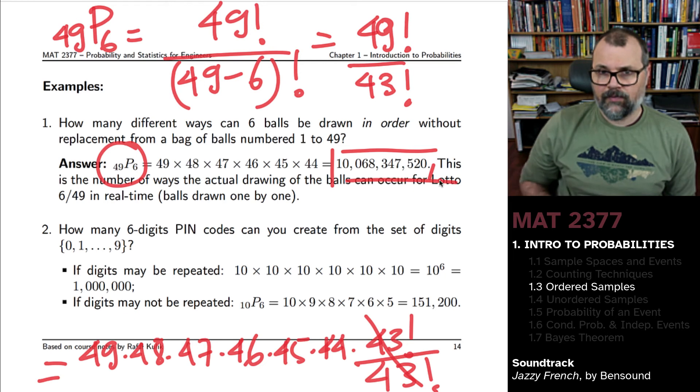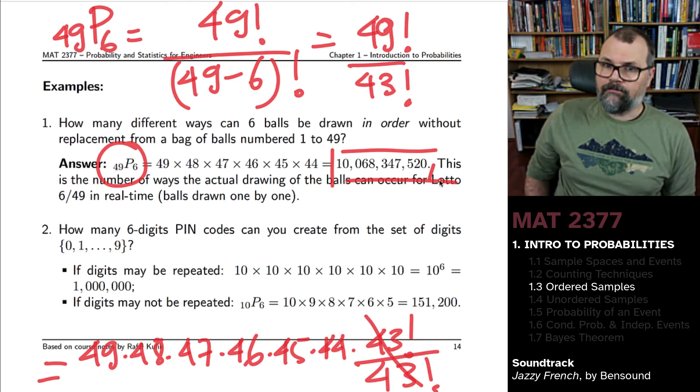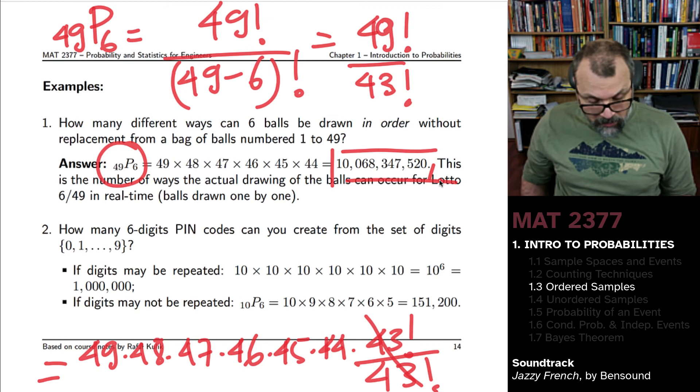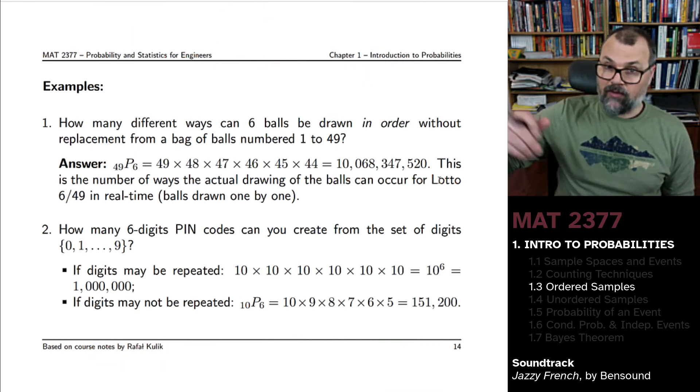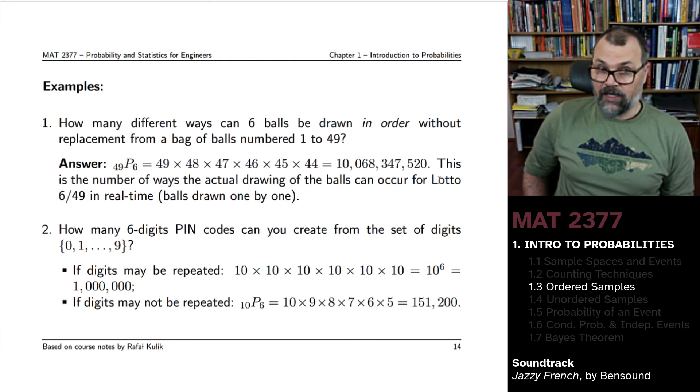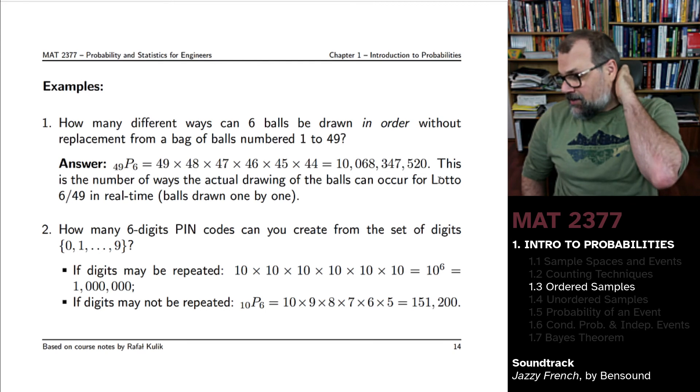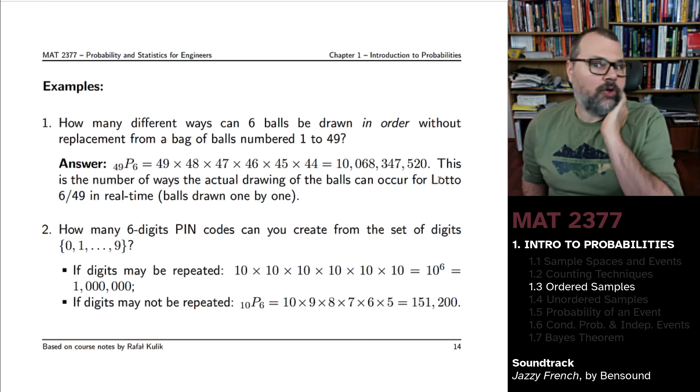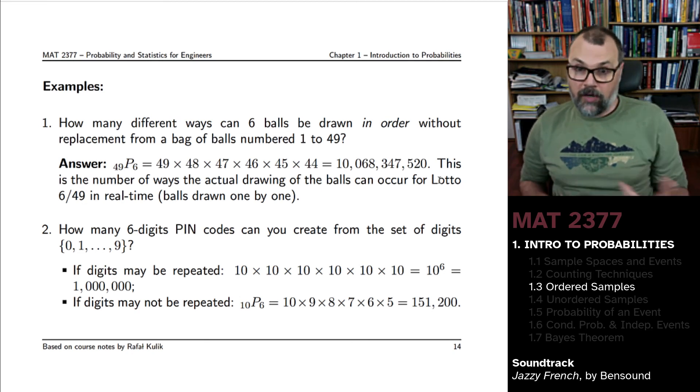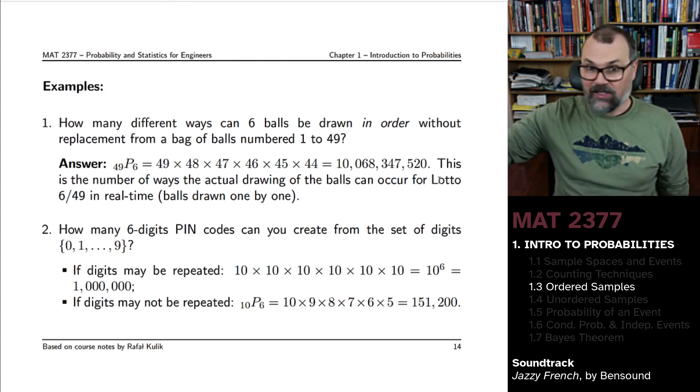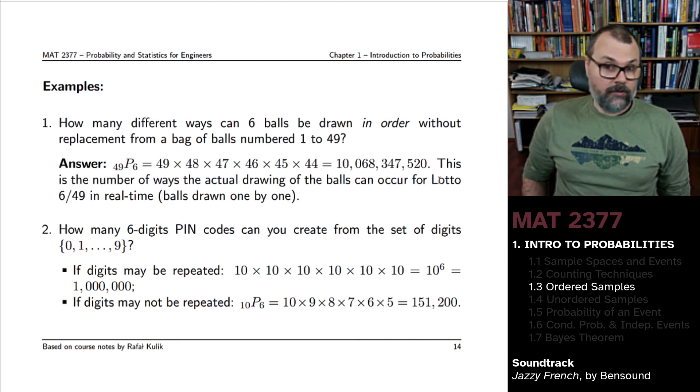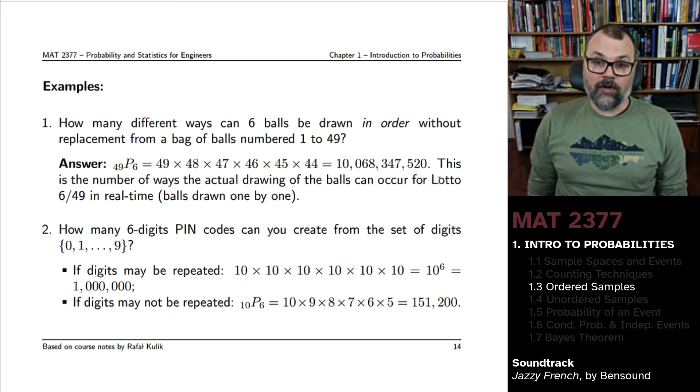This is something you can compute directly. It's a pretty big number, 10 billion, roughly speaking. And that would be the number of ways the actual drawing of the balls can occur for the Lotto 649, if you decide to play lottery games. Now, this isn't the number of possible combinations, because when you play Lotto 649 you don't care about the order in which these things are drawn, but if people have to go and literally manually draw the balls, there's 10 billion ways for six balls to be drawn from a bag of 49 balls. If you draw them one by one and the order matters.